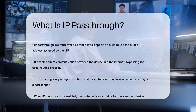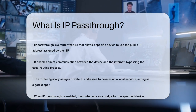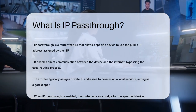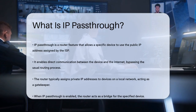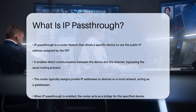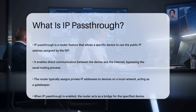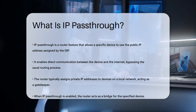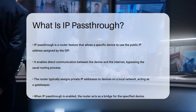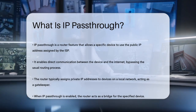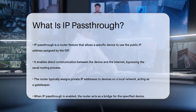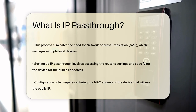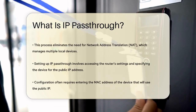IP pass-through is a feature on your router that allows a specific device on your local network to use the public IP address assigned by your Internet Service Provider, ISP, directly. Imagine your router as a gatekeeper that usually assigns private IP addresses to all the devices on your network. But with IP pass-through, this gatekeeper steps aside and lets one of these devices use the public IP address, just like it's directly connected to the ISP.